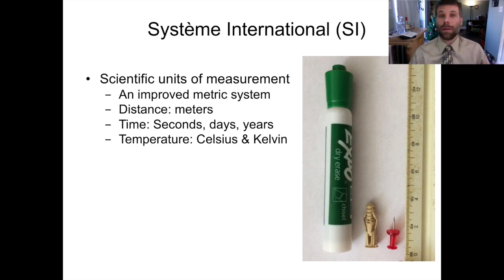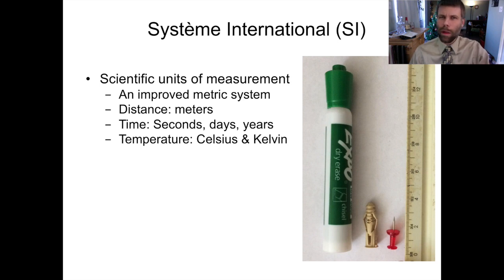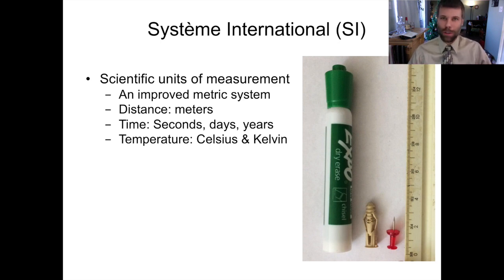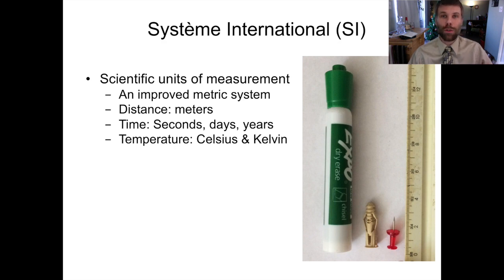In lab sciences, especially in chemistry and thermodynamics, we also rely on degrees Kelvin. Degrees Kelvin is the Celsius scale, but with a shifted zero point. Zero degrees Celsius is a very special value — water freezes at zero degrees Celsius at standard atmospheric pressure. At zero degrees Kelvin, everything freezes. Zero degrees Kelvin is what we call absolute zero. It's the coldest possible temperature in which, according to classical physics, all motion should end.